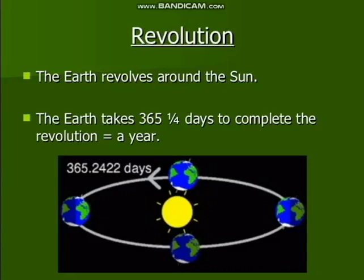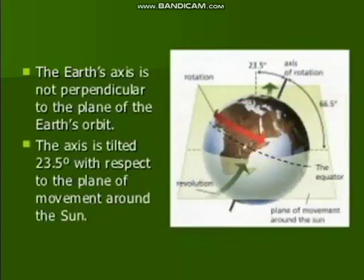Can you see the picture? In between is the sun, and the earth revolves around it. The earth's axis is an imaginary line — it is not perpendicular, meaning not at 90 degrees. It is slightly tilted, meaning sloping. The axis is tilted at 23.5 degrees with respect to the plane of movement around the sun.